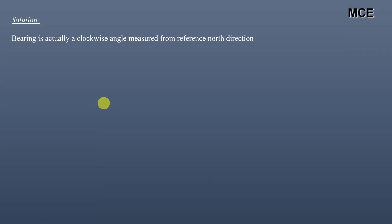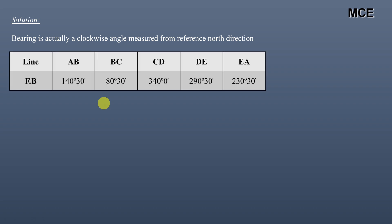A fore bearing is a clockwise angle measured from the reference north direction. When you measure this angle in the direction of the survey it's called the fore bearing, and when you measure it in the opposite direction of the survey it's called the back bearing. The lines and their fore bearings are given in this table.